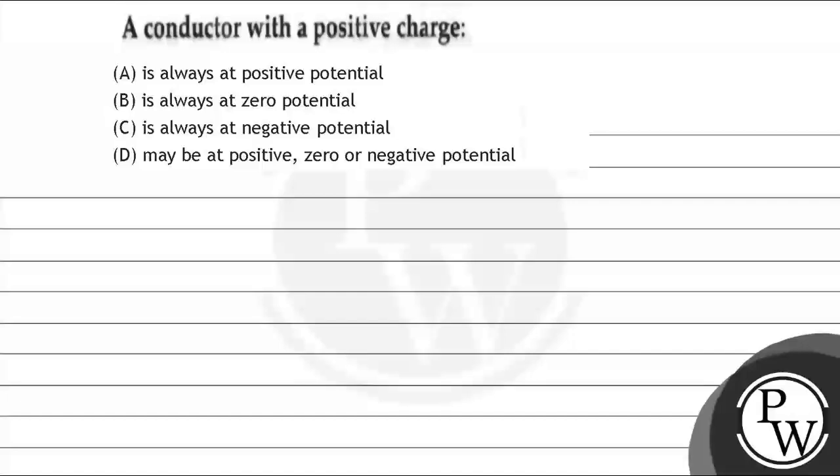Hello guys, let's read the question. The question says a conductor with a positive charge: (A) is always at positive potential, (B) is always at zero potential, (C) is always at negative potential, (D) may be positive, zero, or negative potential.